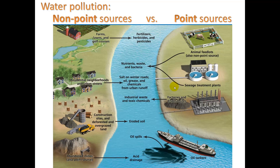Let's look at the difference between non-point sources of pollution and point sources. It basically depends on how large the area is from which the pollution is coming. Farms, lawns, golf courses, neighborhoods, construction sites, deforested land, and overgrazed land can all be large — we call these non-point sources. From these you can get fertilizers, herbicides, and pesticides. From neighborhoods you get salt used on winter roads. From construction sites you get eroded soil, and from clear-cut mountainsides you can get serious erosion.